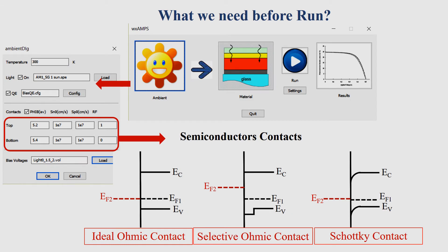Now we will see the interface of this software. This first window is where we put ambient conditions. If we click on this window, a pop-up appears where we set the temperature of the device — here I put room temperature, which can be increased or decreased and will change device performance accordingly. There is another column for light conditions: you can check device performance under illumination or dark conditions. Here I put full sun illumination, or AM 1.5G.